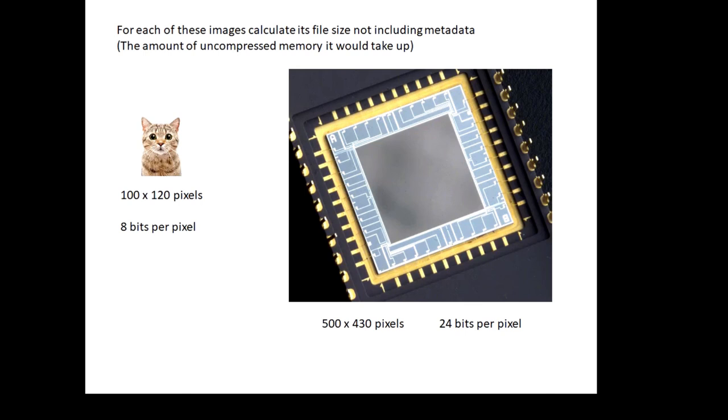For each of these images, calculate the file size—how much memory it would take up. Metadata is just extra information tagged onto the picture, like its dimensions, format, author, and date. But ignoring that, work out the file size of these pictures. The answers are in five, four, three, two, one. I've given the answers in kilobytes. Don't get your bits and bytes muddled up.